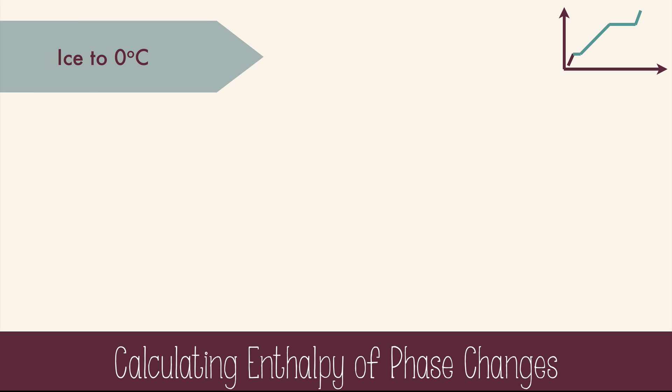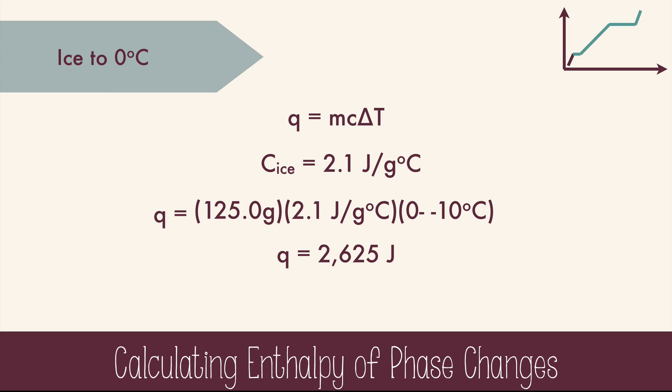First, we'll calculate the energy to warm up the ice to 0 degrees Celsius. Since the temperature is changing as we add heat, we'll use q equals mc delta t because it includes delta t change in temperature. We'll also need the specific heat capacity of ice, which is 2.1 joules per gram degrees Celsius. Now we can plug in our data. So we'll have the mass of 125 grams, the specific heat of ice, and the final temperature of 0 minus the initial temperature of negative 10. Be careful with those double negatives. This creates a positive number. So q will equal 2625 joules.